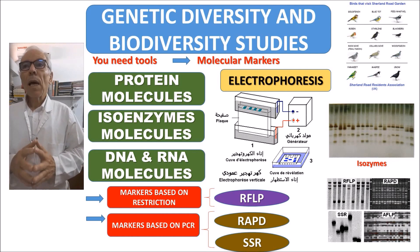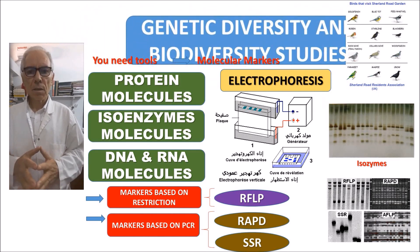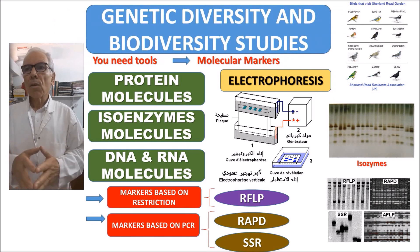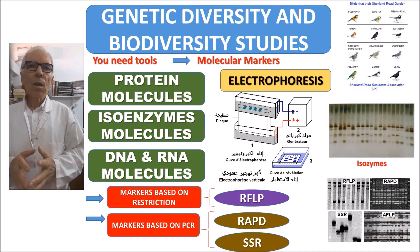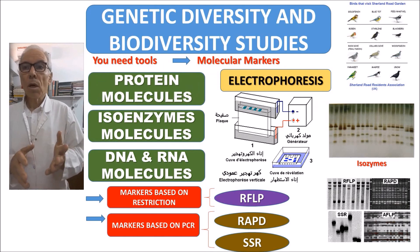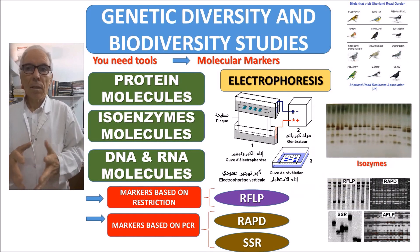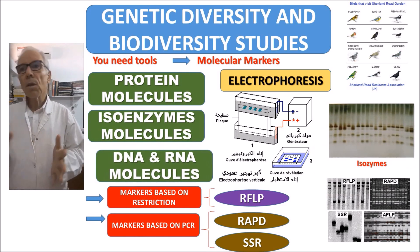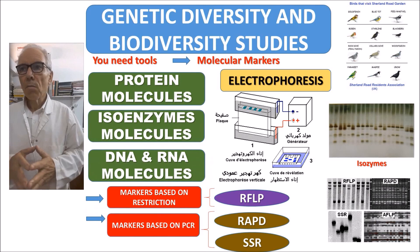In this video I would like to give some answers to quizzes, but before I have to tell some words about genetic diversity and biodiversity studies. If you want to carry out studies regarding these fields, you must develop tools. These tools are molecular markers. Molecular markers could be protein markers, could be isoenzymes. These are enzymes that catalyze the same reaction but differ in some physical chemical characters.